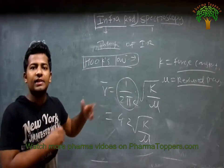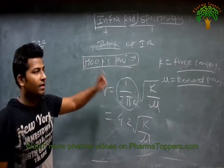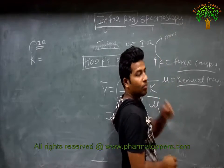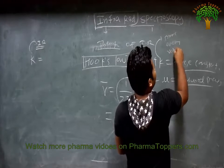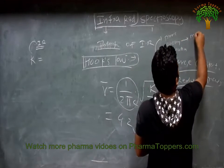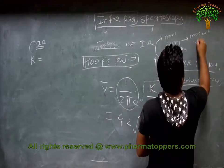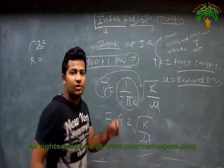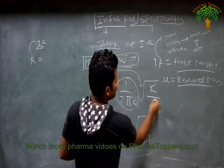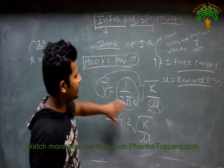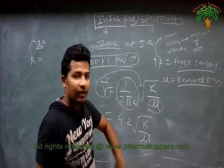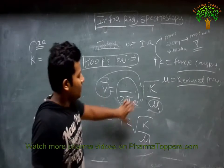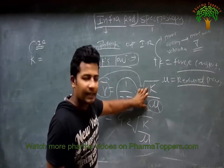More the force constant K, more will be the energy required to vibrate, and therefore more will be the wavenumber. Always remember: more K → more energy required for vibration → higher wavenumber. Wavenumber is directly proportional to the force constant K, and inversely proportional to the reduced mass μ.